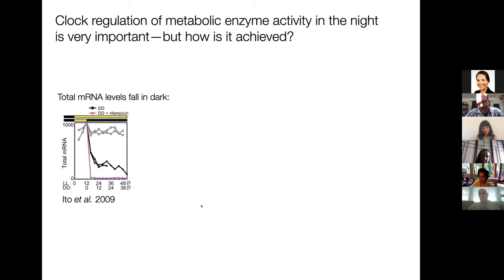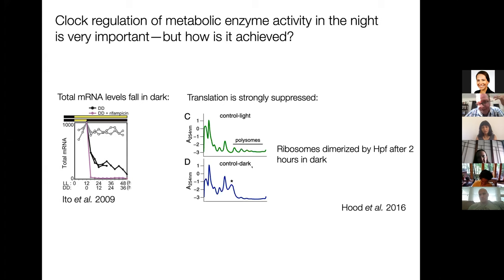It turns out that a common way that we think about regulation of pathways, which is through control of gene expression, is probably not a good candidate. As soon as the cell is going into the dark, their transcriptional machinery is rapidly shut down. The total mRNA in the cell compared to being in the light falls by a factor of 10 or so within the first couple hours of being in dark. Similarly, translation is strongly suppressed. Most of the ribosomes are dimerized by this thing called hibernation promoting factor. So this leads you to think if you're going to control the activity of metabolic pathways, it's going to have to be something beyond transcription and translation.